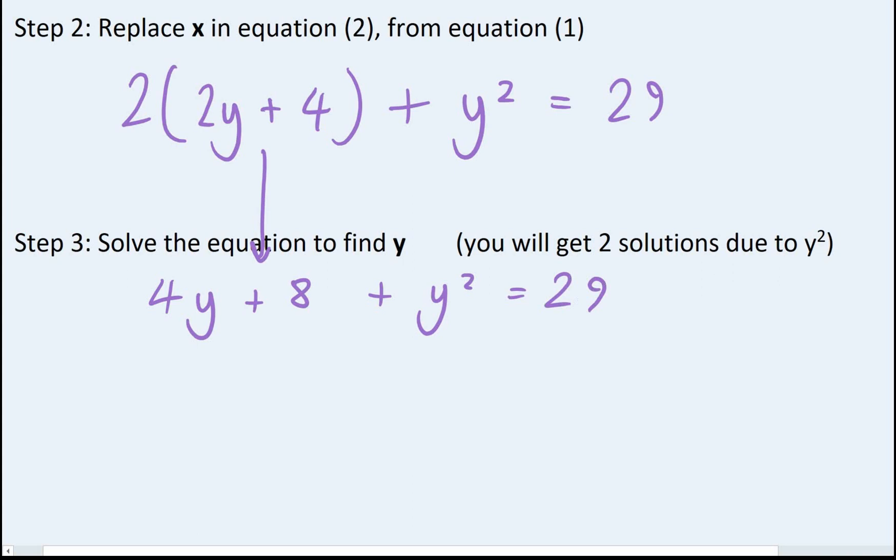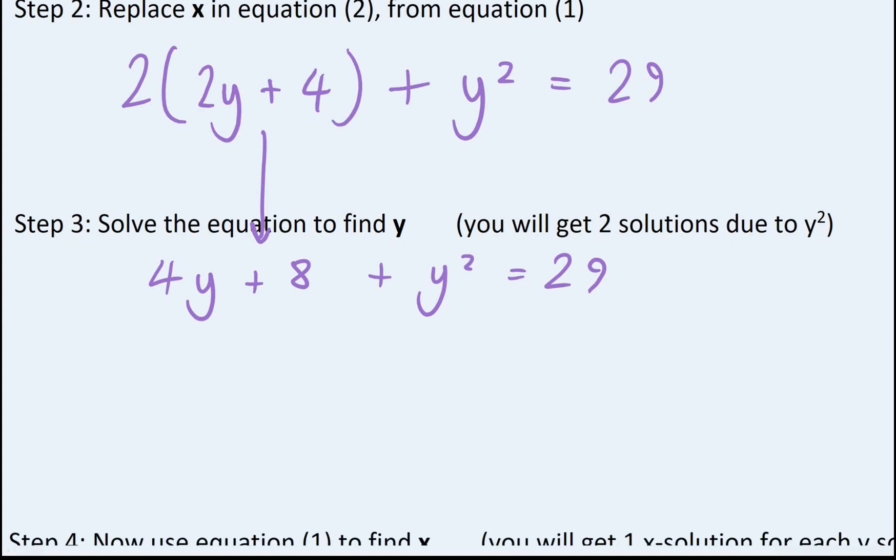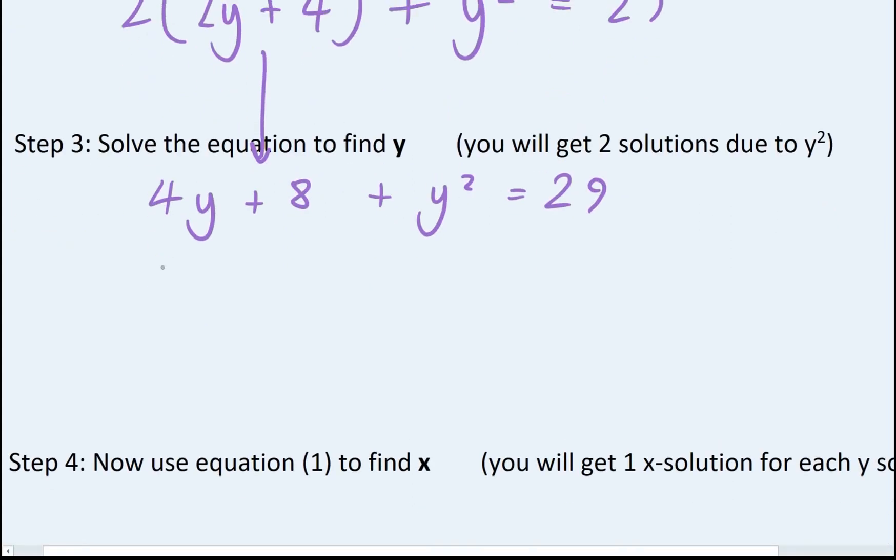Solving any quadratic, some basic rules. It must equal 0 and you always want y squared first, then y and then any numbers. So I'm going to do both of those two things. So y squared goes to the front, then I've got my y's and I want to get rid of this 29. So I need to take it away. And if I do 8 take away 29, that is going to be minus 21 equals 0.